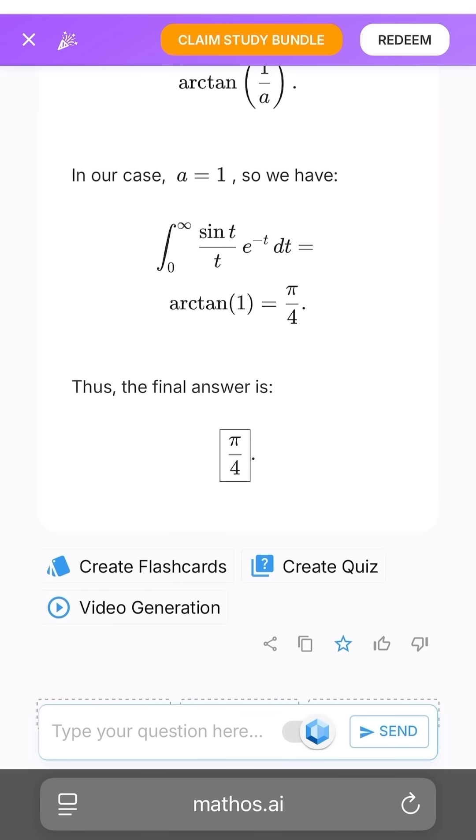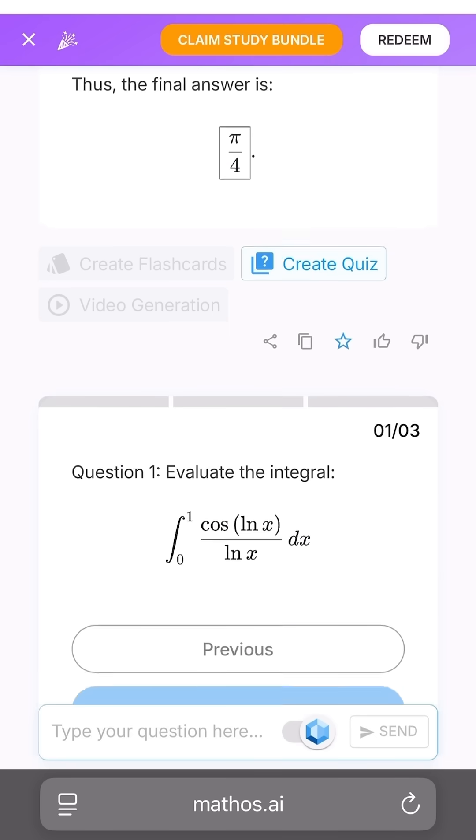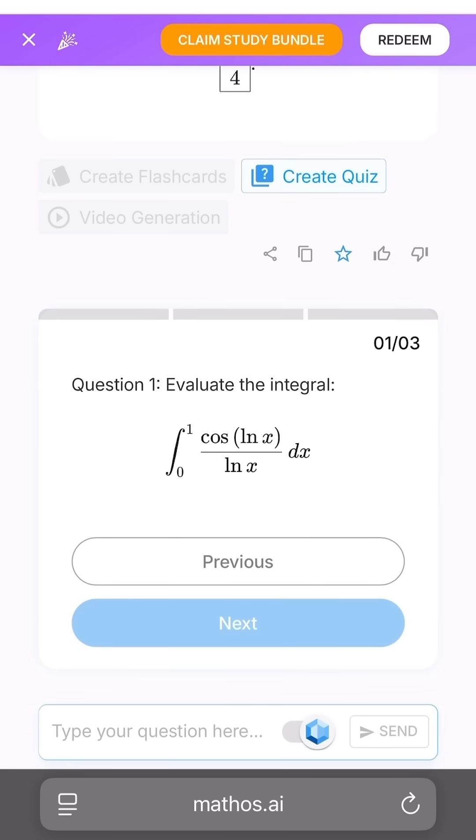And we can now have it create a quiz for us based on this problem. Let's see what it has for us. Ah, the same integral but with a cosine instead. How do we solve this one? What do you guys think?